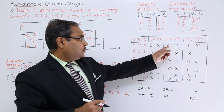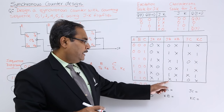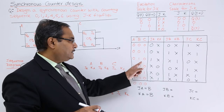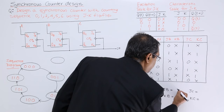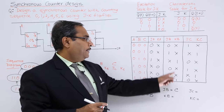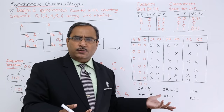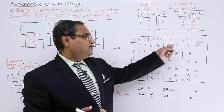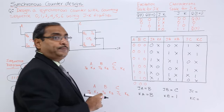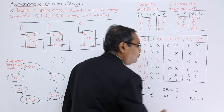For JB, we require 0, 1, don't-care, 0, 1, don't-care — this matches the C column, so JB = C. For KB, throughout the column we can replace all x values with 1, so KB = 1. Similarly, KC = 1. I write these accordingly.